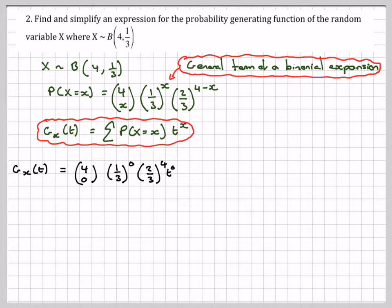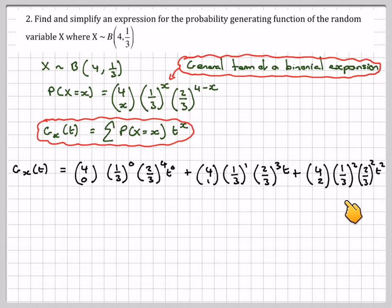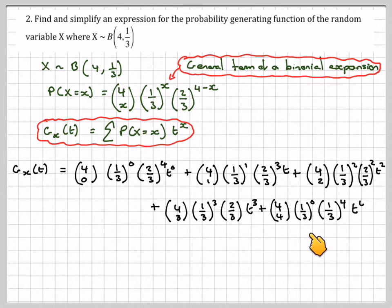So gx of t will be 4c0, this is when x is equal to 0, 1 third to the 0, 2 thirds to the 4, t to the 0, plus 4c1, 1 third to the 1, 2 thirds cubed times t, plus 4c2 times 1 third to the 2, 2 thirds to the 2, t squared, plus 4c3, 1 third cubed times 2 thirds t to the cubed, plus 4c4, 1 third to the 0, 1 third to the 4th, t to the 4th.